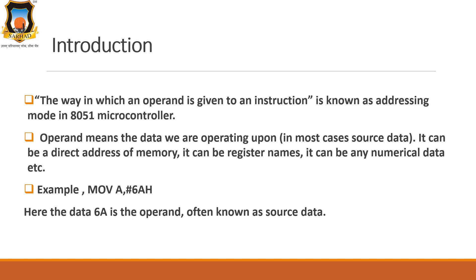Let's see one example to understand what is an operand. The example is: MOV A, #6AH. Here, data 6A is the operand, often known as source data. When this instruction gets executed, data 6AH is moved into the accumulator A. So 6A is the operand and it is known as source data.